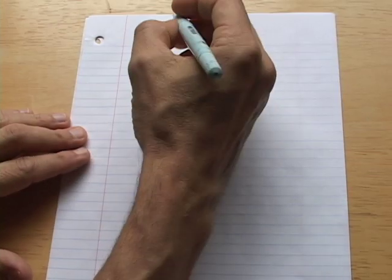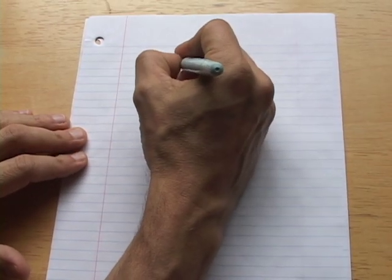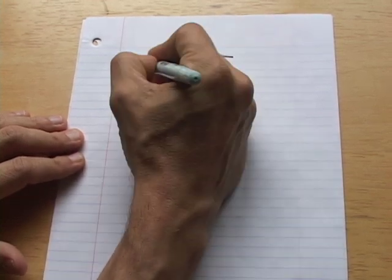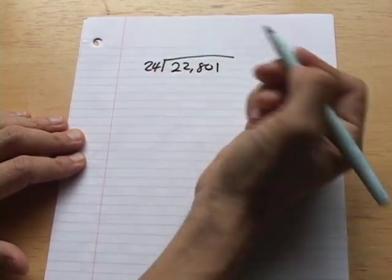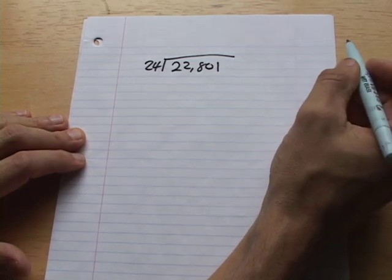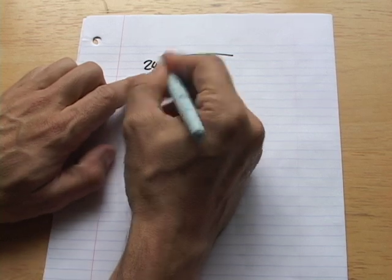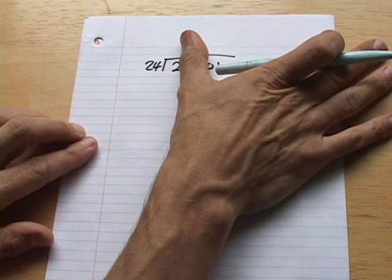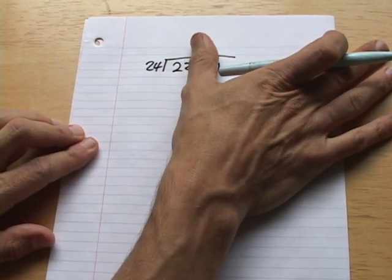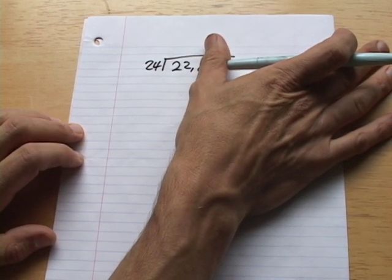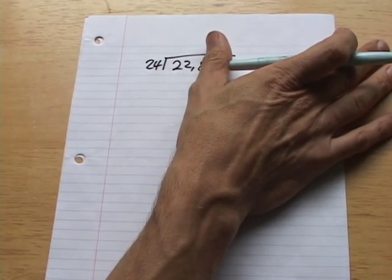So let's take something a little bit more complex like, I don't know, let's see, 22,801 divided by 24. And you have something like this traditionally, in more conventional long division, you have to look at this and go, okay, 24 goes into 2. Of course it doesn't. So then you've got to look at 22. And then you've got to look at 228, right?